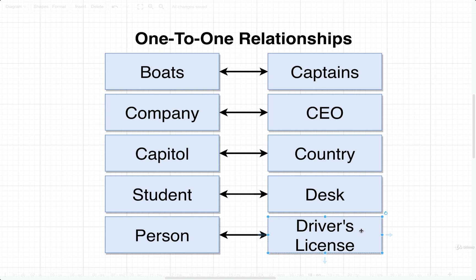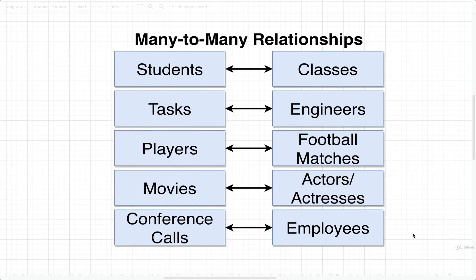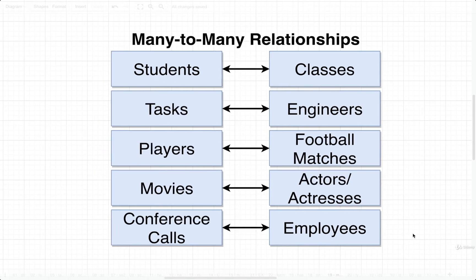And then finally, a person and a driver's license. A person probably only has one driver's license at a time, and that driver's license is intended for one single person. If I have a driver's license, I can't give it to you and have it work for you — the driver's license has my name on it, so it's intended just for me and nobody else. So those are some examples of one-to-one relationships.